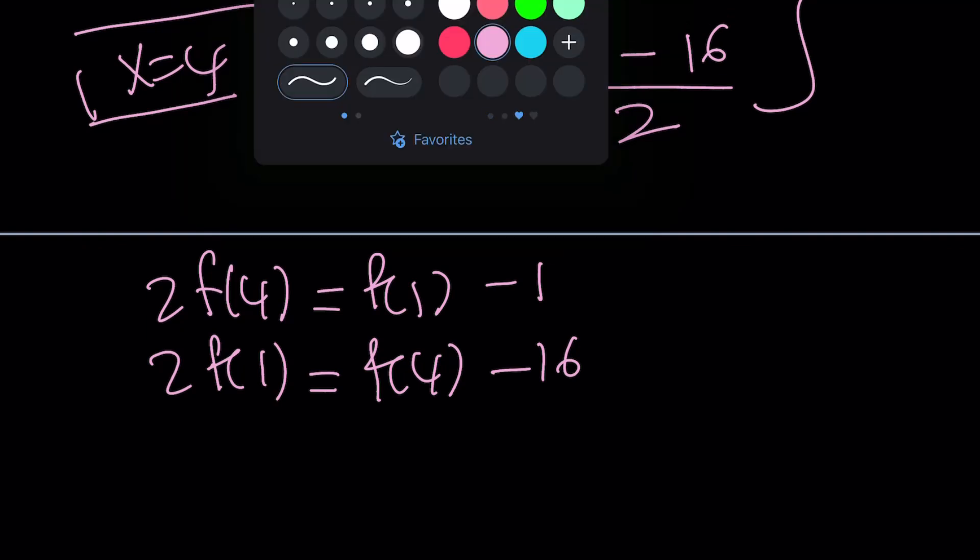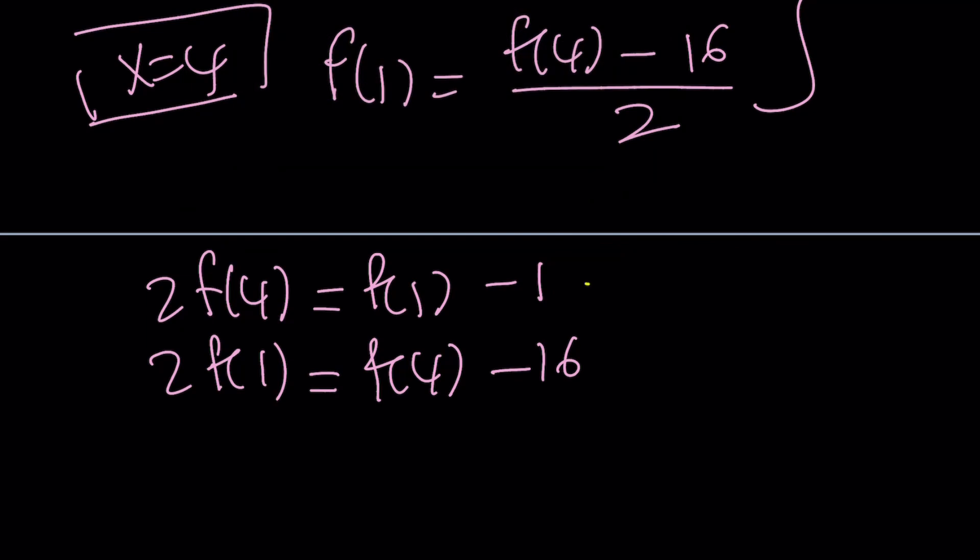So to substitute, and since I'm looking for f of 4, it would make sense if I could isolate f of 1. So f of 1 can be written as 2f of 4 plus 1. Now I can go ahead and substitute that here.